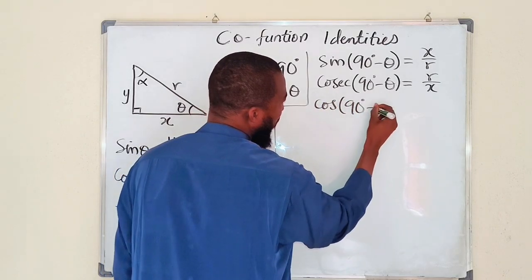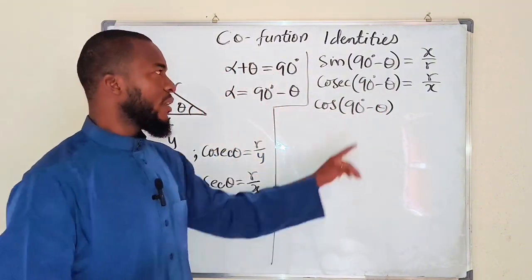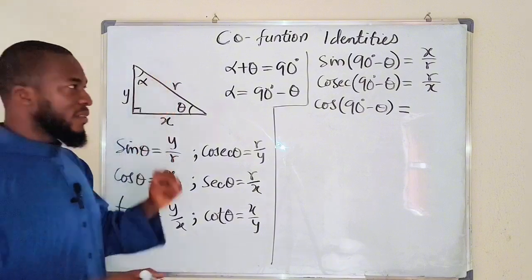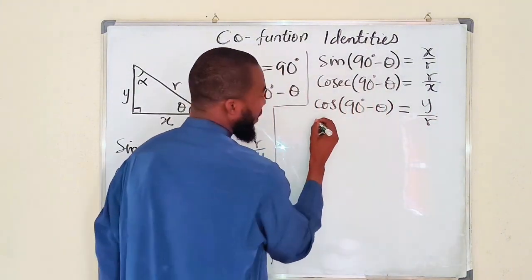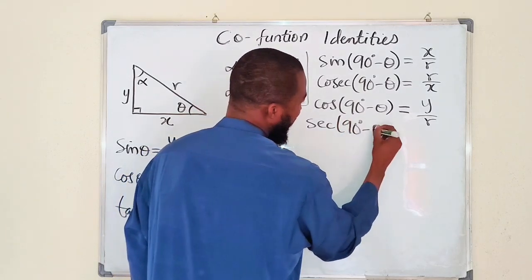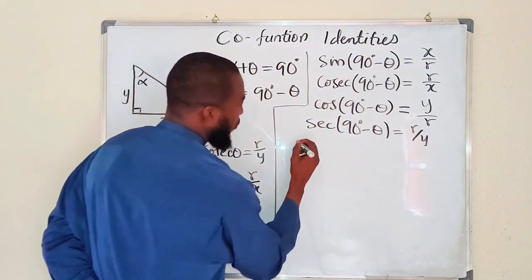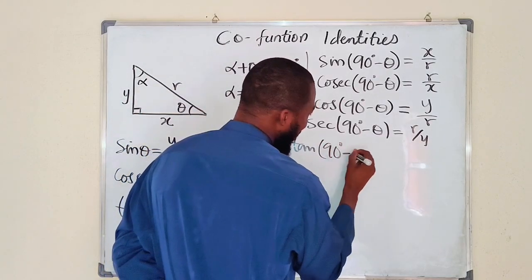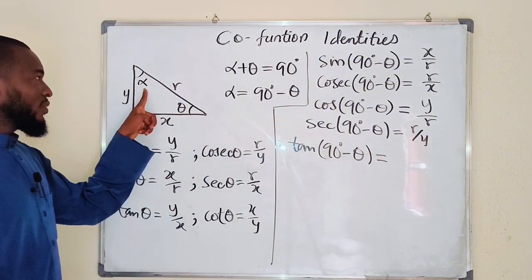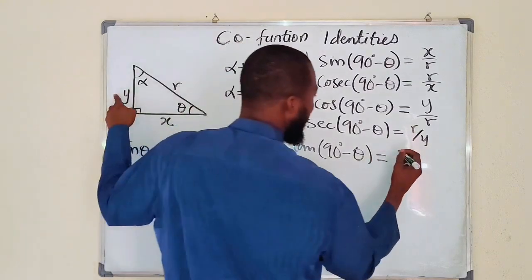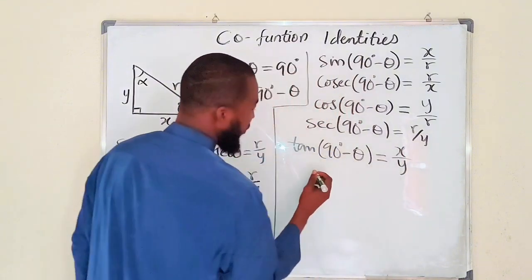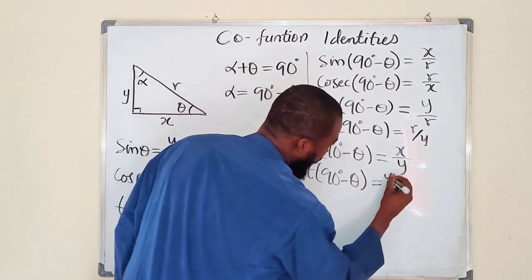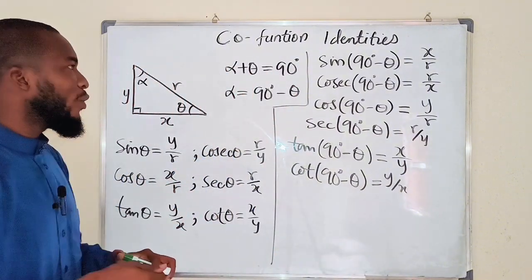Cosine of (90° - theta) — note this is in degrees; in radians it would be pi over two — equals adjacent divided by hypotenuse, that is y divided by r. Secant of (90° - theta) equals r divided by y. Tangent of (90° - theta) equals opposite divided by adjacent, that is x divided by y. And cotangent of (90° - theta) equals y divided by x.